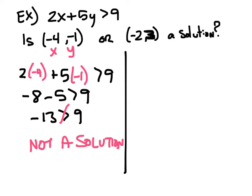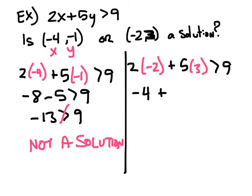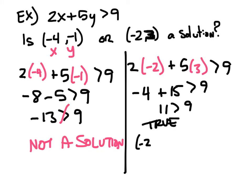Now let's test (-2, 3). We have 2 times negative 2 plus 5 times 3 is greater than 9. That would be negative 4 plus 15 is greater than 9. 11 is greater than 9 — this is true. So (-2, 3) is a solution.